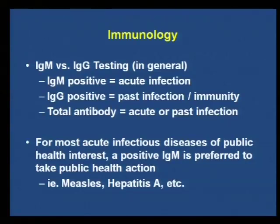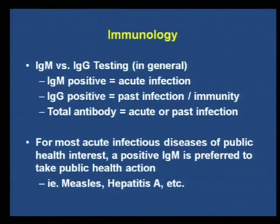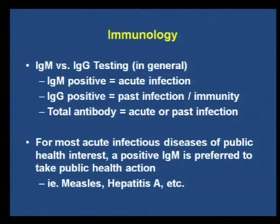Regarding IgM versus IgG testing: IgM positive tests usually mean acute infection, IgG usually means past infection or immunity, and total antibodies mean either acute or past infection. We get a lot of total antibody tests for hepatitis A, but for public health purposes we need a positive IgM to take action — total antibody just tells us the person either did have or now has hepatitis A. For measles, we get a lot of providers accidentally ordering IgM testing to check for immunity. If you suspect someone has measles in your office, give us a call so we can clarify things from the beginning.